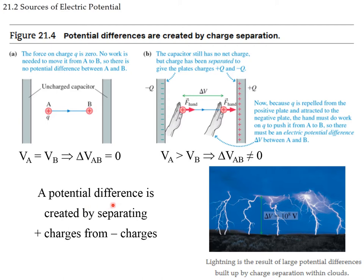This potential difference is created by separated charges — positive charges separated from negative charges set up the electric field and change the potential. This is similar to what happens with lightning: charges build up in the clouds, and there is a reservoir of charges on the ground, and the lightning happens when there is a large difference in electric potential that attracts the charges down.